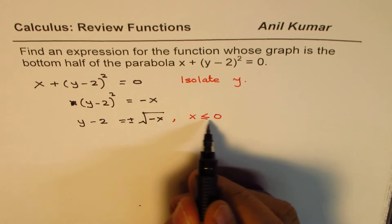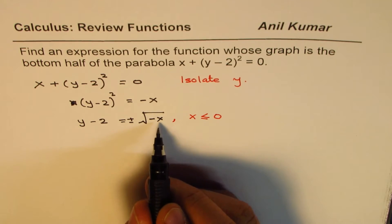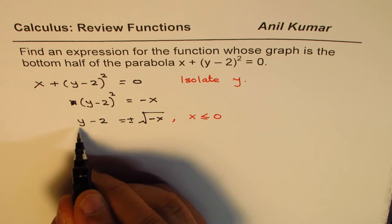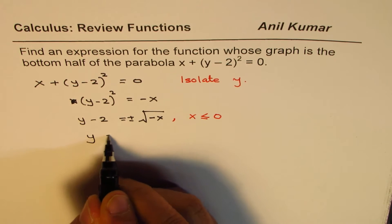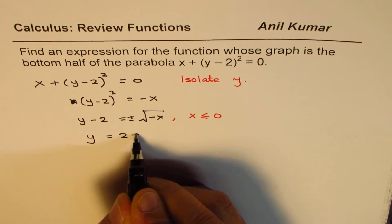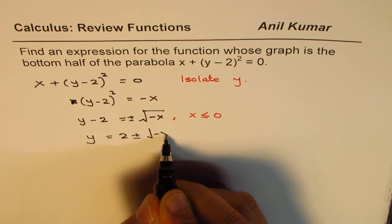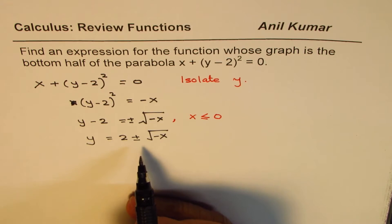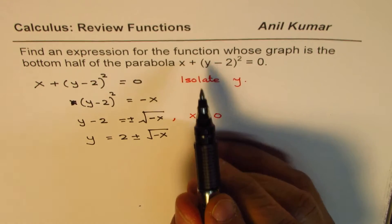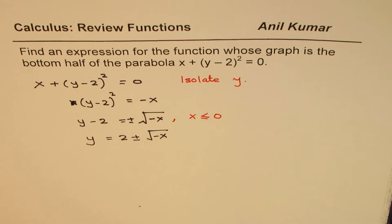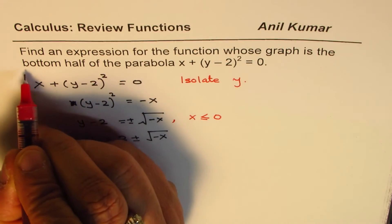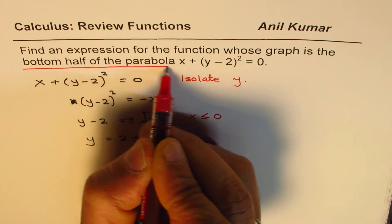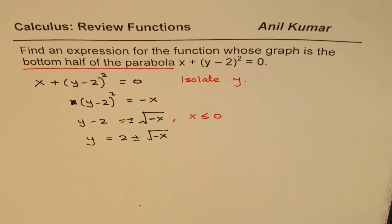Now you can easily write what y is. So we say y = 2 ± √(-x). Does it make sense? It does. So that becomes the expression for the function. But the question says we need to write the expression for the bottom half of the parabola. Now, what is that bottom half?